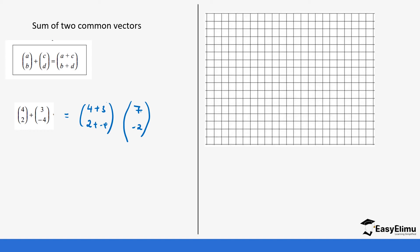So this vector is moving seven units on the x-axis in the positive direction — one, two, three, four, five, six, seven units — this is the final x point. Then two units downward on the y-axis — one, two — so our vector goes from the starting point to this final point, like this.